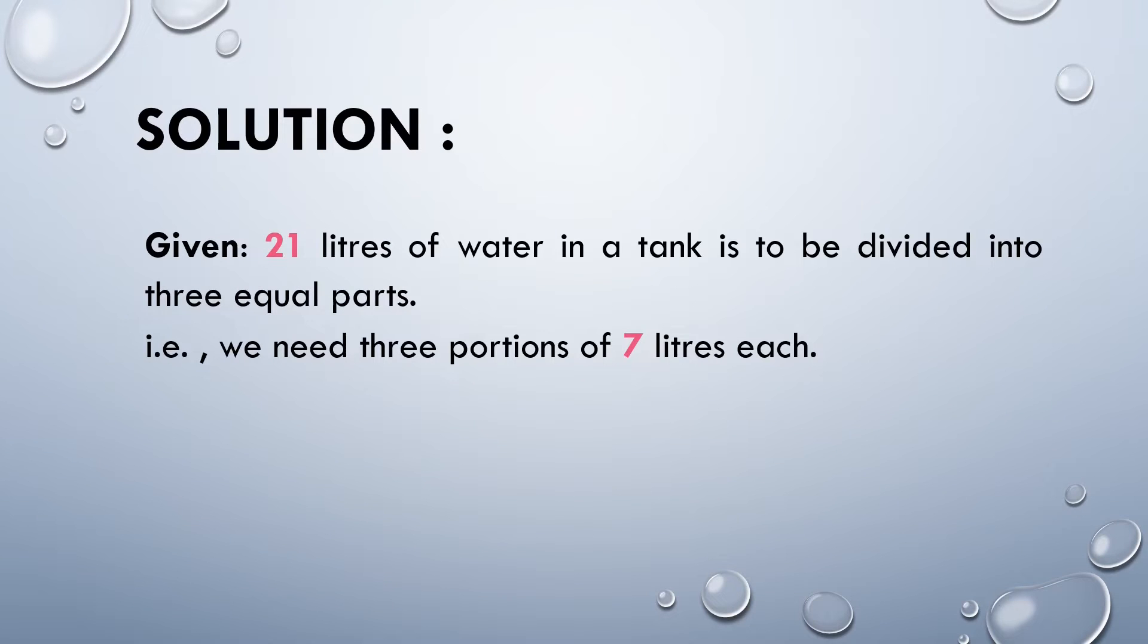It is given that 21 liters of water in a tank is to be divided into 3 equal parts, i.e., we need 3 portions of 7 liters each.